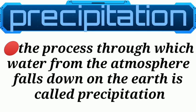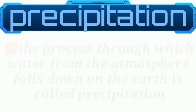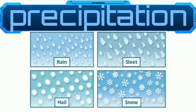The process through which water from the atmosphere falls down on the earth is called precipitation. In this process, no change of state of water is involved — there is only a change in geographical location from the atmosphere to the hydrosphere and lithosphere. Precipitation occurs when thin cloud droplets join together into large rain droplets, become heavier, and fall through the atmosphere to the earth's surface.